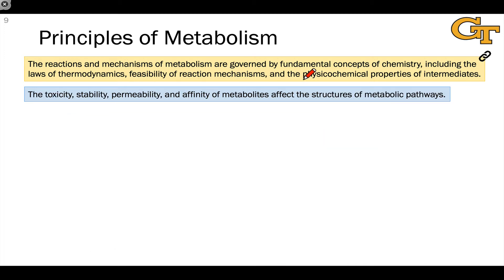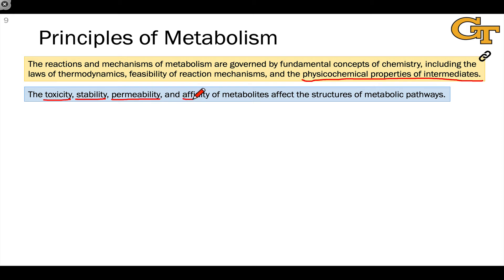Finally, we need to keep in mind that the physicochemical properties of metabolites or intermediates in metabolic pathways play a role in the structure of metabolism. Properties like the stability of intermediates, their toxicity, how they affect other biomolecules, their permeability through the cell membrane — whether the cell can hold onto them — and their affinity for enzymes and other biomolecules all play a role in the structures of metabolic pathways.